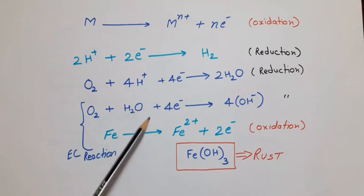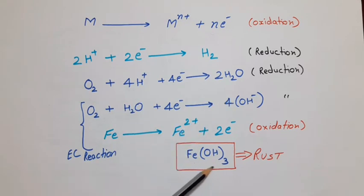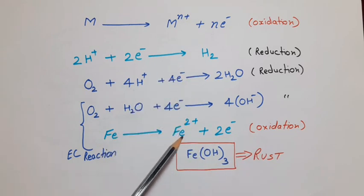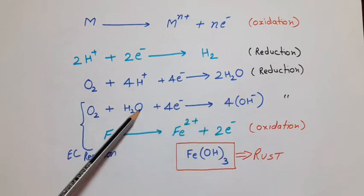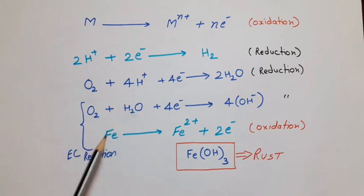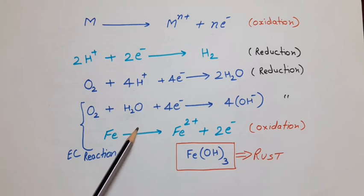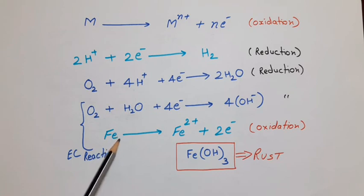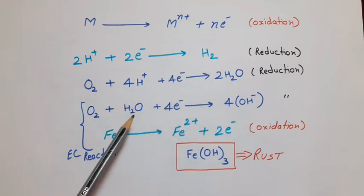And if we add these two reactions, then Fe₂O₃ compound will form, which is a type of rust. Here we should remember one thing: anodic site, means where oxidation is happening, and cathodic site, means where reduction is happening, should be different. If anodic site and cathodic site are same, then corrosion will not occur. The reason is very simple — if an element gets oxidized and the same element gets reduced also, then the net reaction is zero. Therefore, the oxidation and reduction should happen at different sites for the occurrence of corrosion.